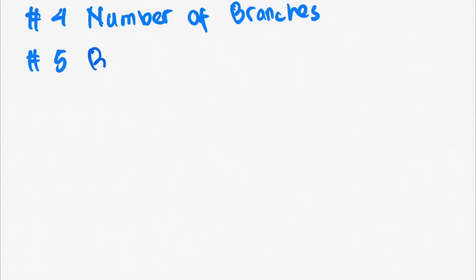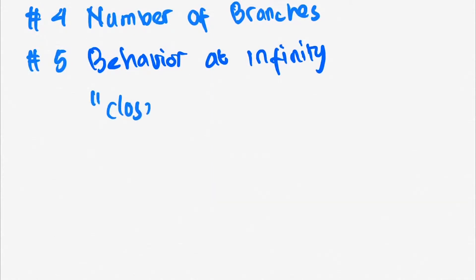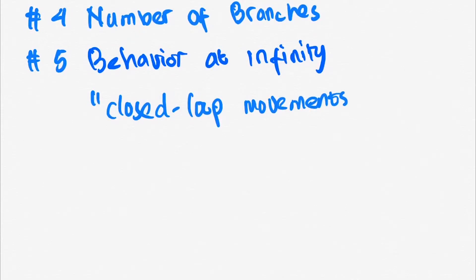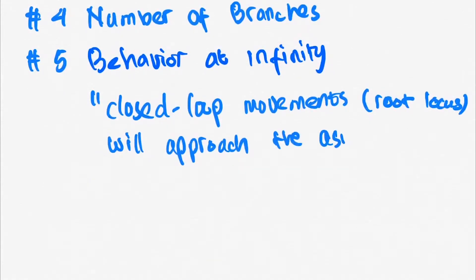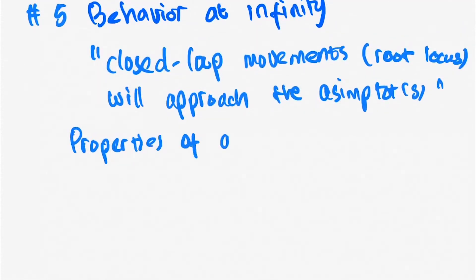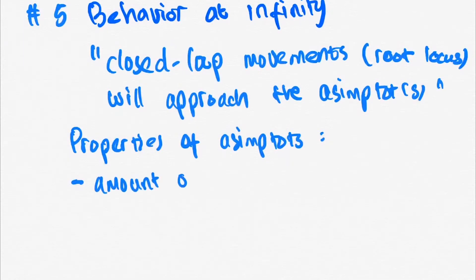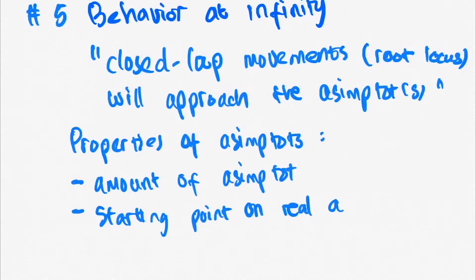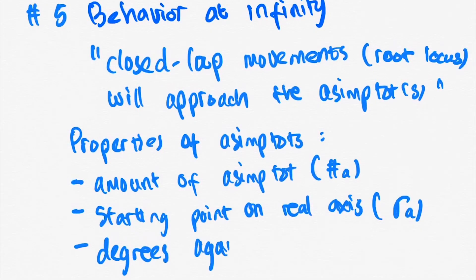Criterion five covers the root locus as it approaches infinity. For every finite open-loop pole that doesn't have a finite open-loop zero — indicated by the denominator being of higher order than the numerator — they will move towards infinite open-loop zeros. The path approaches straight lines as asymptotes, and the asymptote has three components: the number of asymptotes, the starting point on the real axis, and the angle against the real axis.